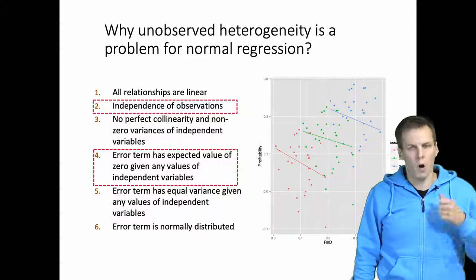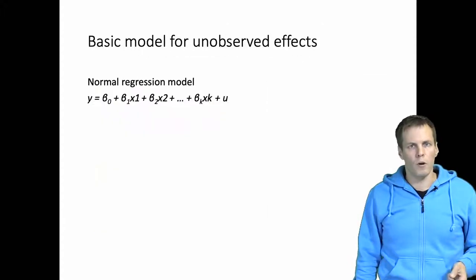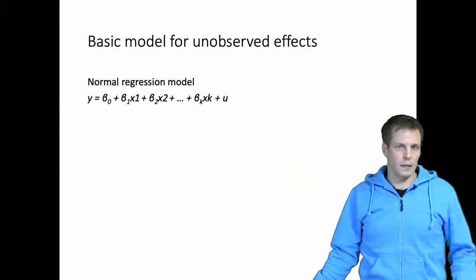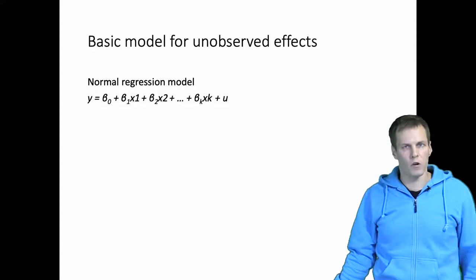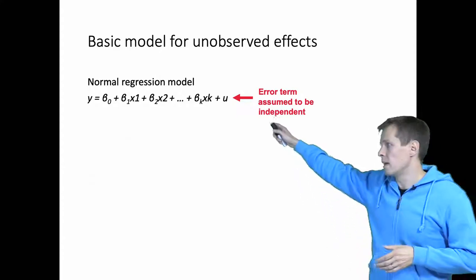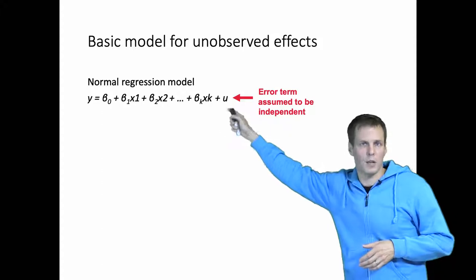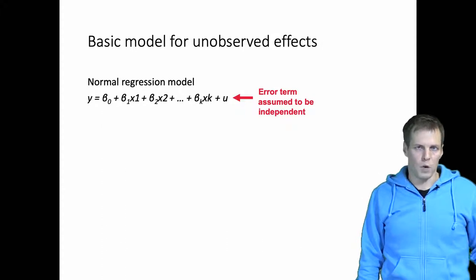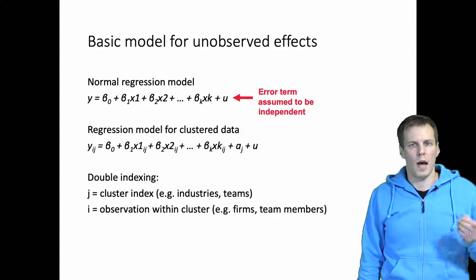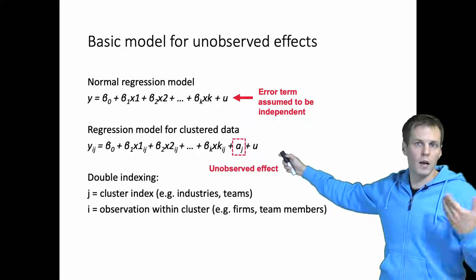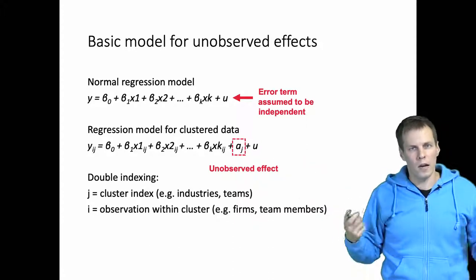Let's look at how we model unobserved heterogeneity, starting with normal regression analysis. In the normal regression model we have a fixed part containing the regression coefficients and variables, and then an error term assumed to be independent and identically distributed. We can extend this to an unobserved effects model by adding a term for the unobserved effect, which we call A_j.